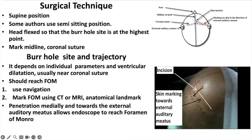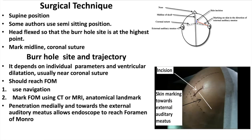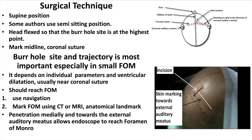In surgical technique, the patient is supine; some authors also use a semi-sitting position. The head is flexed so the burr hole is at the highest point. The midline and coronal suture are marked, and the burr hole is marked with the direction toward the external auditory meatus also marked on the skin. The most important point in ETV surgery is the site of the burr hole and the trajectory, especially when the foramen of Monro is comparatively small.